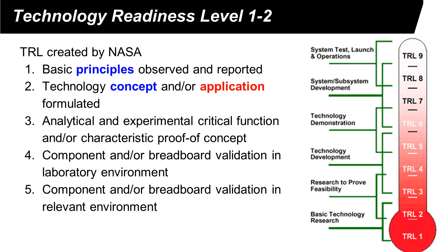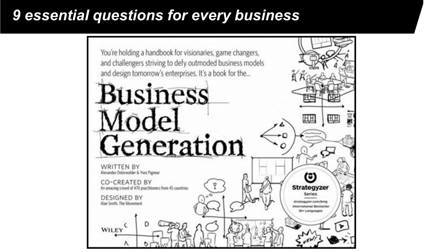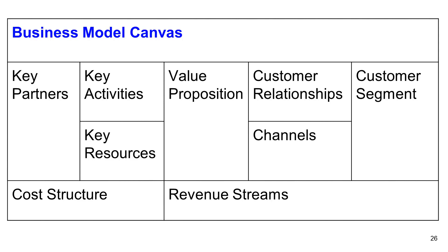Level five means the validation is conducted in a relevant environment. For the semester project, you need to understand the concept of business model generation. Your report needs to explain the important components in business models. The book Business Model Generation introduces a concept called the Business Model Canvas.